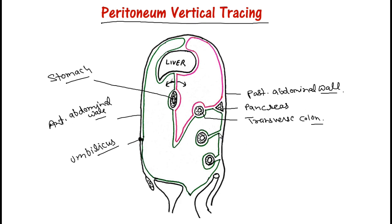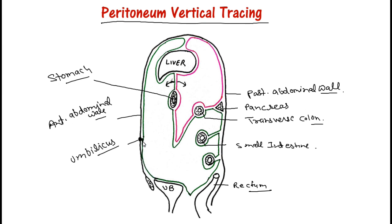This layer will come toward the posterior abdominal wall and enclose the small intestine, then again reflect going toward the posterior abdominal wall and enclose the sigmoid colon, then the anterior part of the rectum. This layer covers the anterior surface of the rectum and the upper surface of the urinary bladder, and again it will reach up to the pubis. So this is the reflected peritoneum.